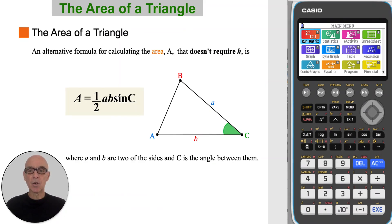An alternative formula for calculating the area that doesn't require the height H is A equals one half AB sin C, where A and B are two of the sides and C is the angle between them. Or it could be one half AC sin B, or it could be one half BC sin A.